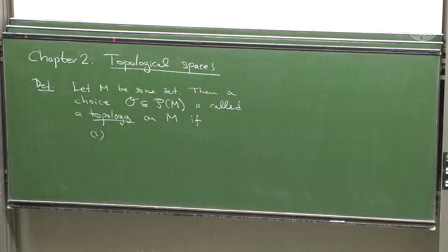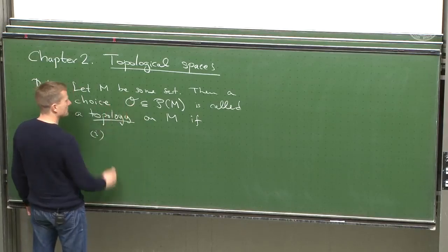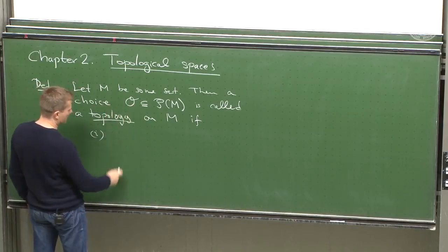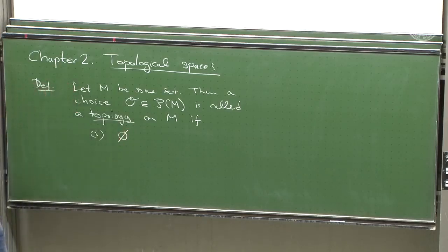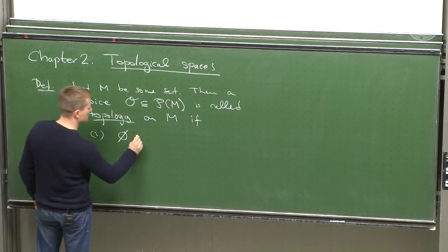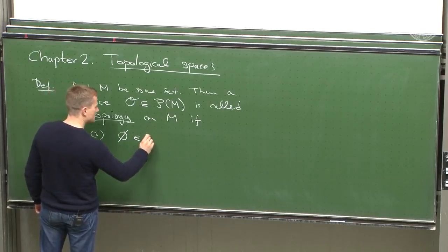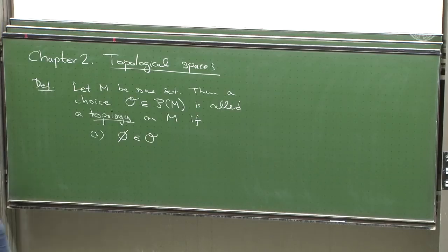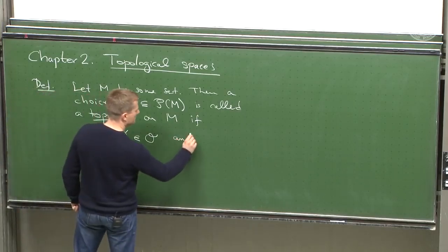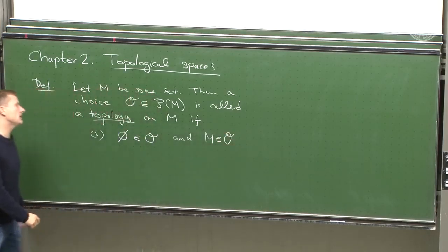You're not entirely free in your choice — that's the idea of these three axioms. One condition is that certainly the empty set, which is an element of the power set of any set, must be in your pick of topology, and likewise the entire set M must also be part of your choice. If you don't do that, you already have no topology chosen.